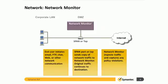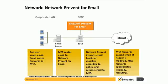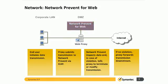Network Monitor is a span or tap into the network that allows full line capture. Whenever a communication channel is opened up, Network Monitor inspects, captures, and reports on any DLP policy violations that may be contained in the data streams. Network Prevent for Email integrates with SMTP-compliant mail transfer agents to monitor SMTP traffic and then block or modify it for downstream processing. Network Prevent for Web integrates with web proxies to monitor HTTP, HTTPS, and FTP traffic and then terminate or modify it prior to downstream processing if a violation is detected.